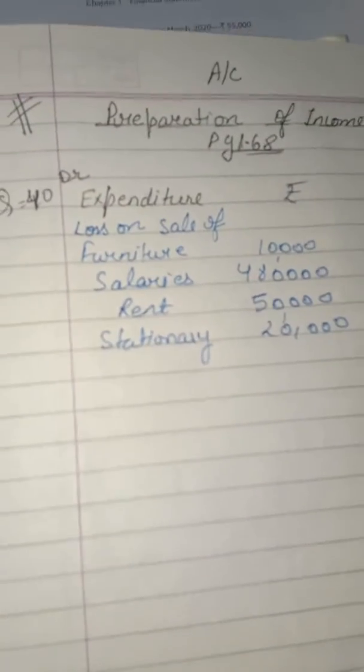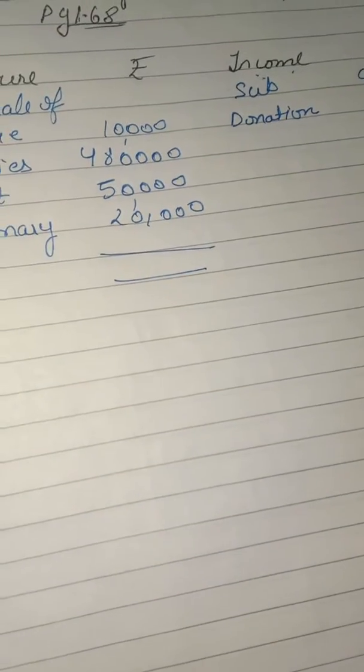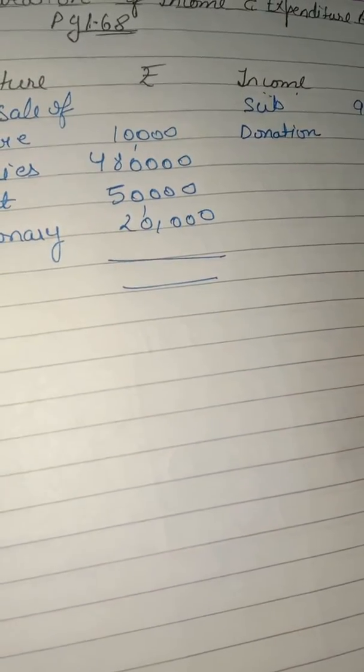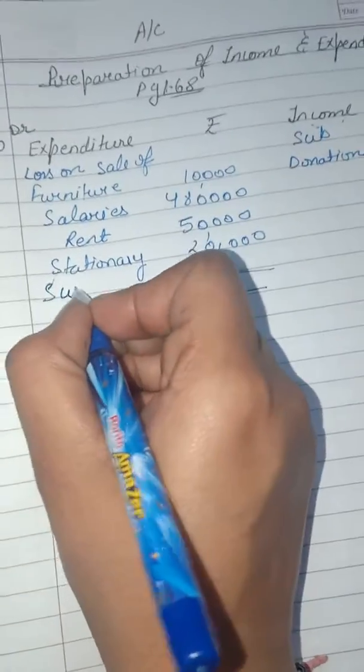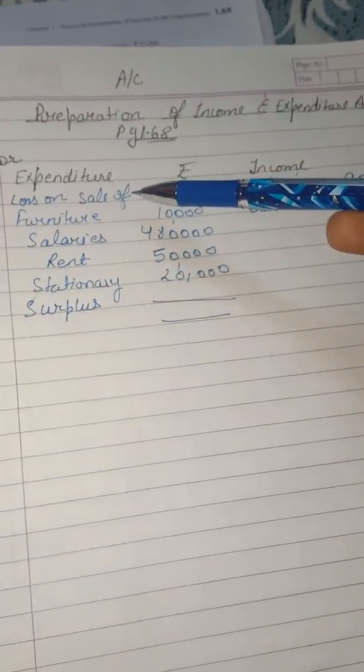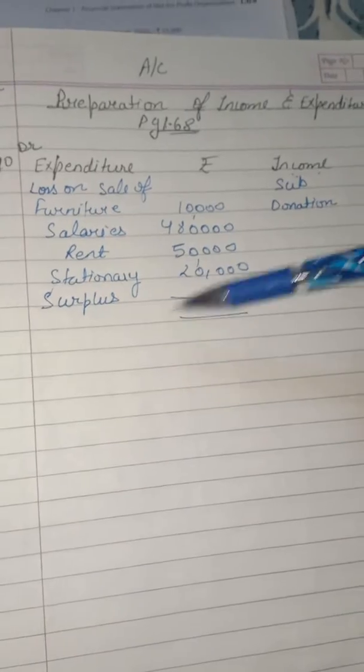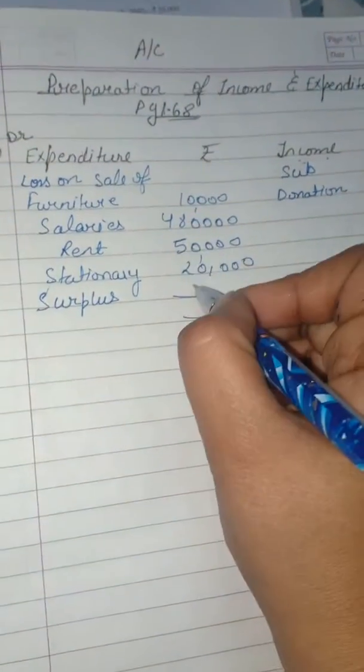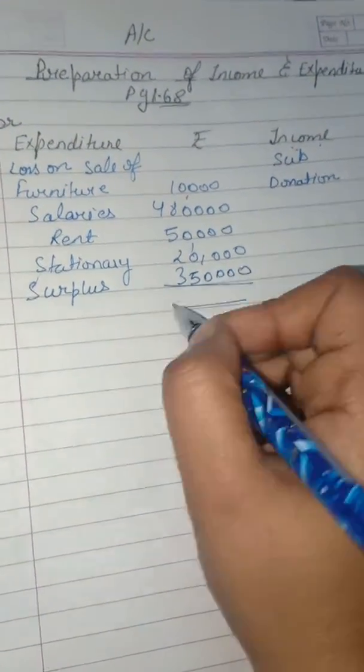Let us calculate both sides. Our income is coming to 9,10,000. From that we subtract our expenditure side. What remains is surplus. Surplus, as I told you, occurs when the credit side is more than the debit side. So our surplus, after subtracting all expenditures, is 3,50,000.